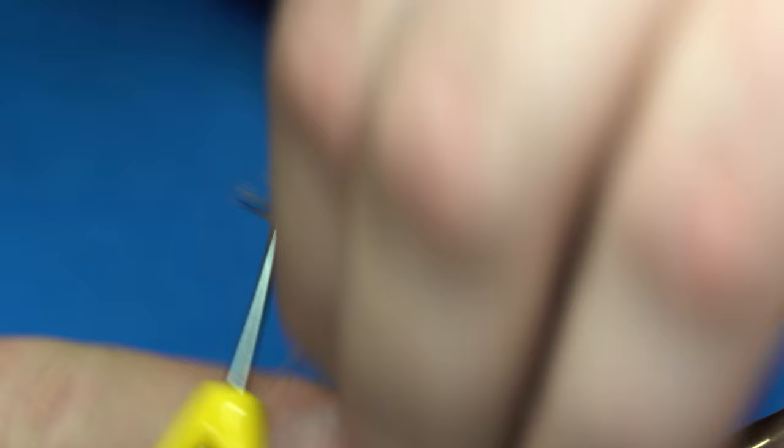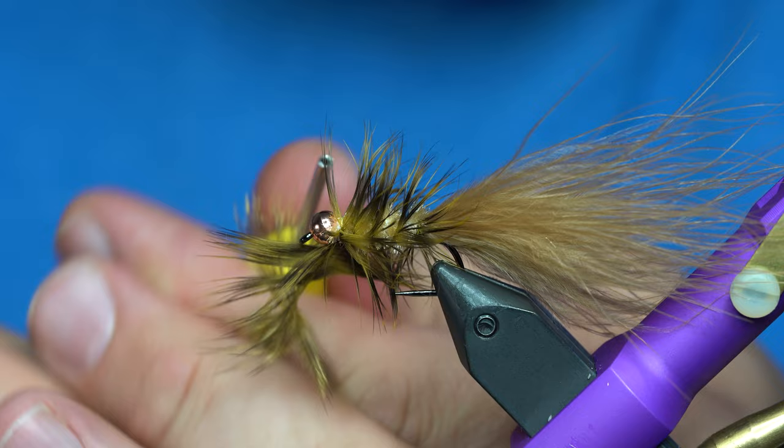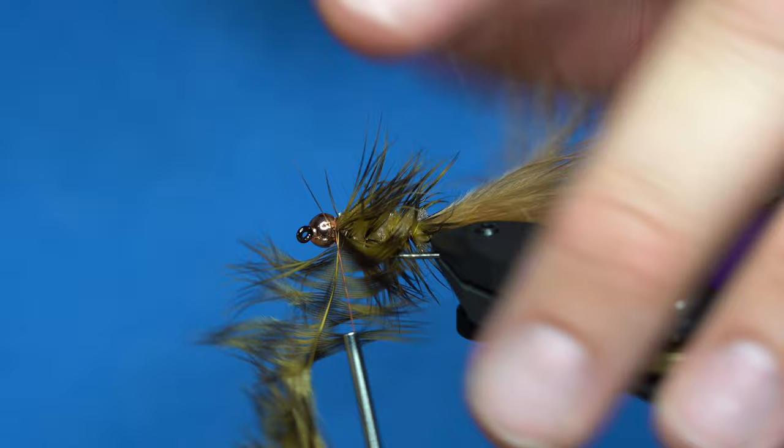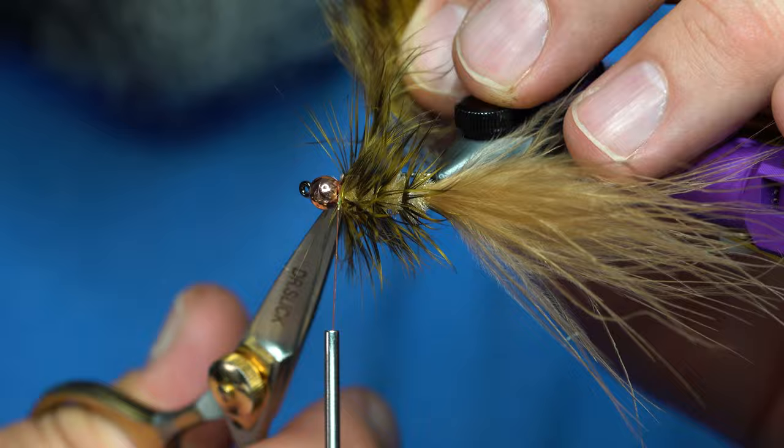Tie that in, trim it off, then we'll just take our hackle and wrap it forward. And this hackle wants to kind of lay however it wants, but once it's in there, you can really tease it out and make it look good. Before I cut it off, I like to bend that hackle back, preen all the fibers back, and build up a little bit of a thread head, and then we'll trim that off.